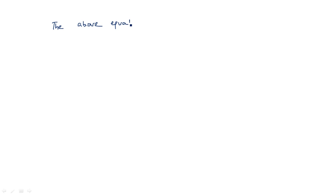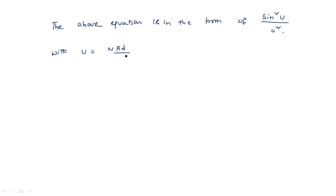This expression can be rewritten in the form of sin²(u)/u², where u = N·π·d/λ · (sin θ − sin θ₀). The term sin θ − sin θ₀ appears because the radiation pattern is transmitted in the theta naught direction.